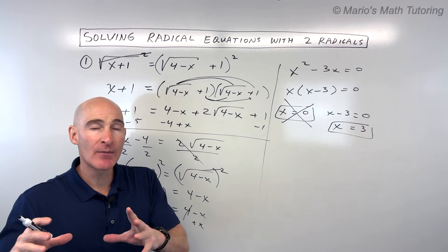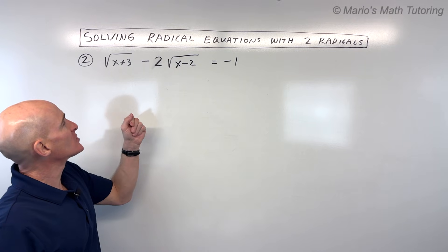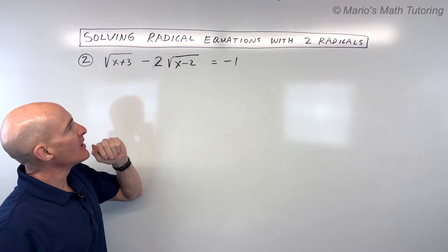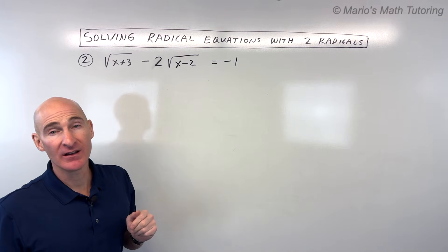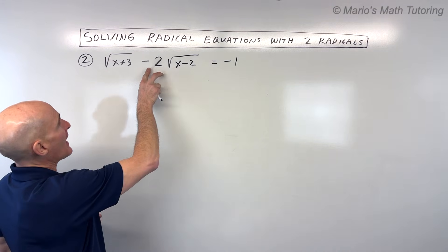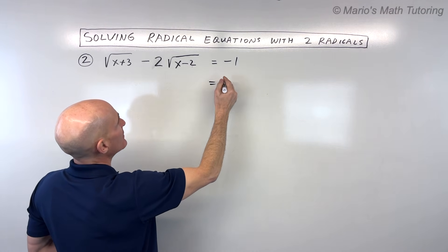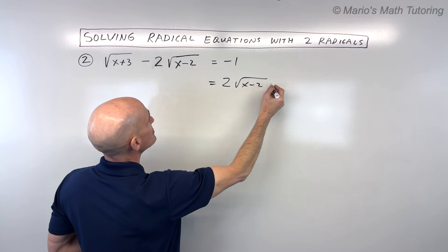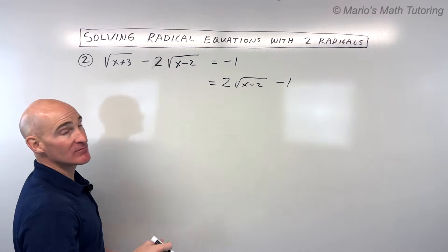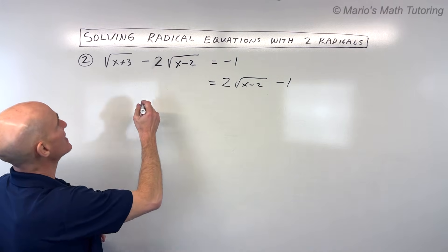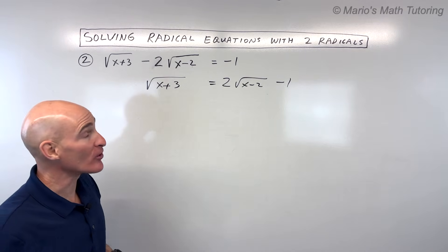Let's erase the whiteboard and look at a more challenging example — see if you can do it on your own by pausing the video. Step one: get one of the radicals by itself on one side of the equal sign. To do that, I'm going to add this group to the other side, giving us positive two times the square root of x minus two minus one on the right. Remember, switching a term to the other side changes its sign.